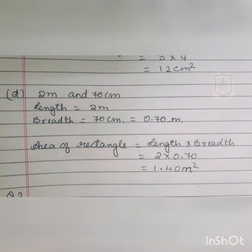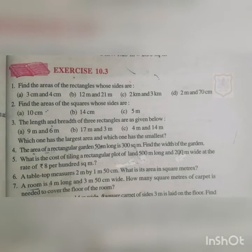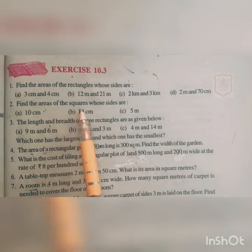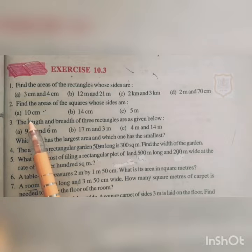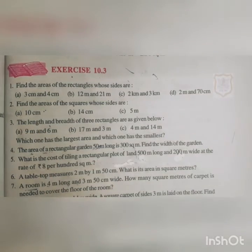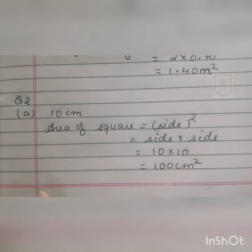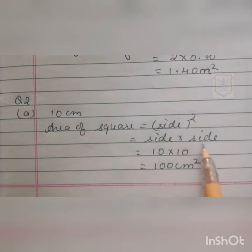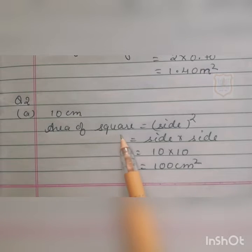For question 2, we find the areas of squares whose sides are 10 cm, 14 cm, and 5 meters. A square has equal length and breadth. For 10 cm, the length is 10 cm and the breadth is also 10 cm. The area of a square is side × side, so 10 × 10 gives 100 cm². The area of the square is 100 cm².